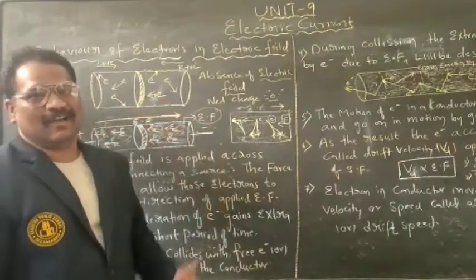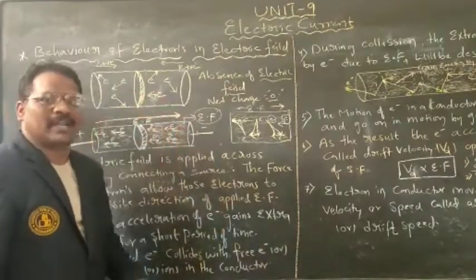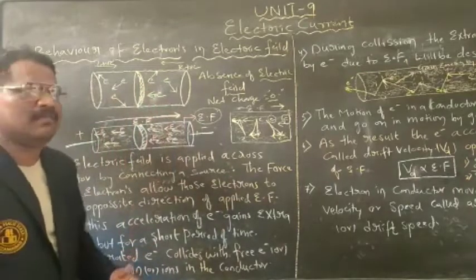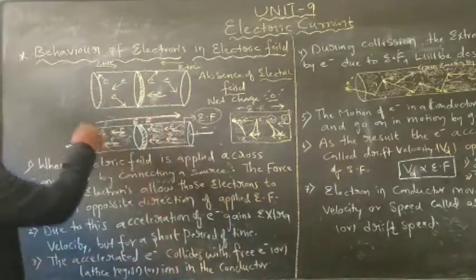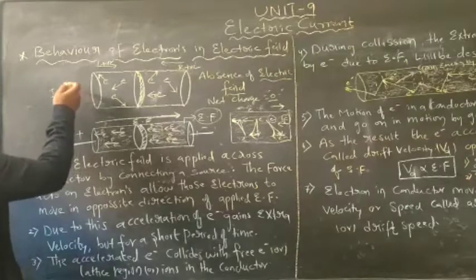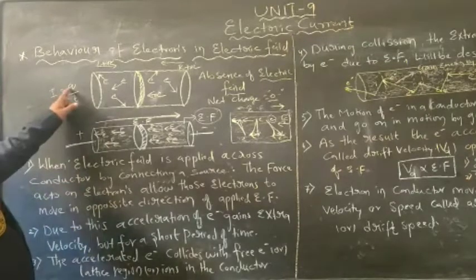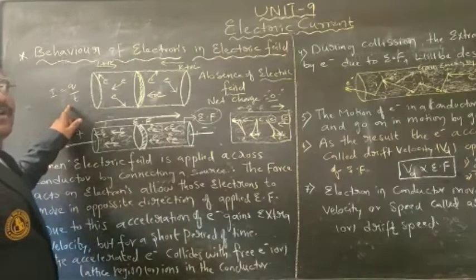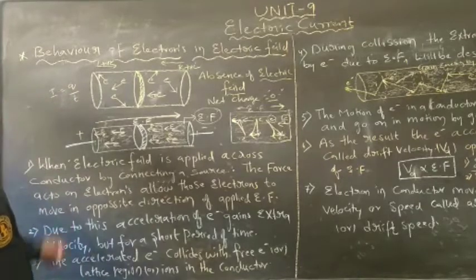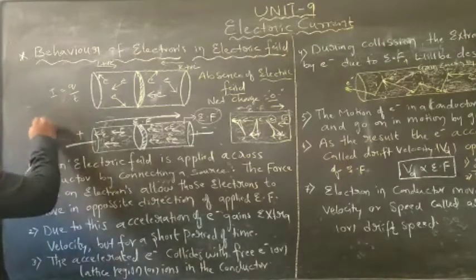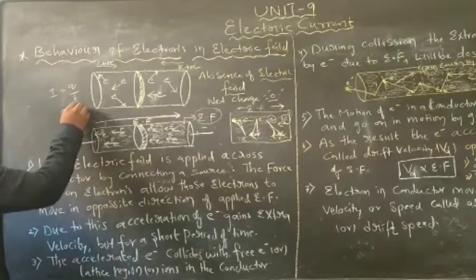Electric current is nothing but I = Q/T, where Q is the amount of charge flowing per time interval. Electric current is called electric current, and its unit is the ampere.